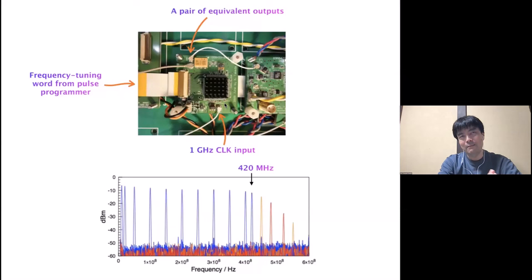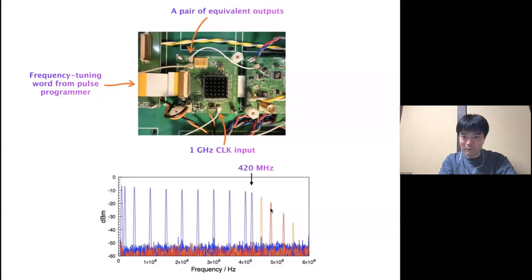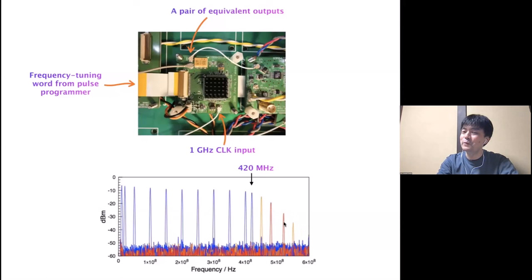For DDS, the maximum output frequency is around 0.4 times the clock frequency. We examined the output and found that up to 420 MHz the output is fine. At higher frequencies, such as 450 or 480 MHz, we have quite non-negligible spurious components visible as orange lines in the spectrum. This may also be removed by another filter.